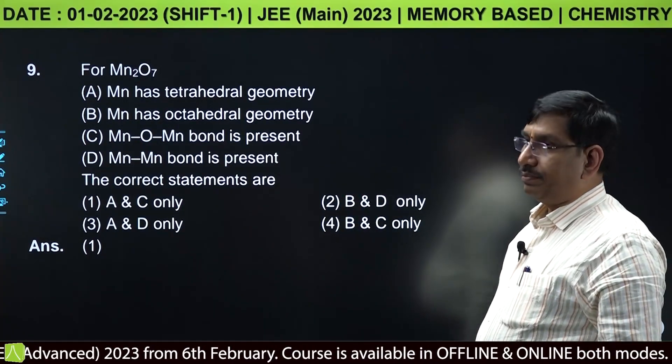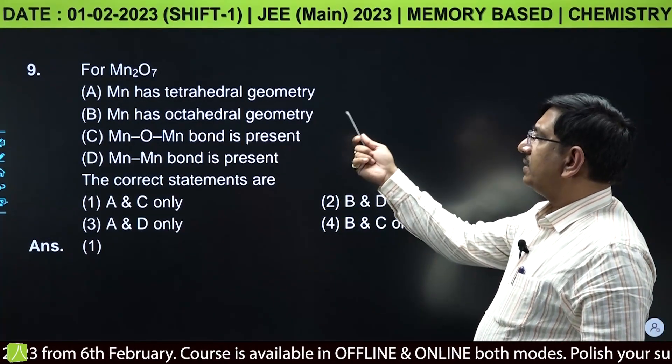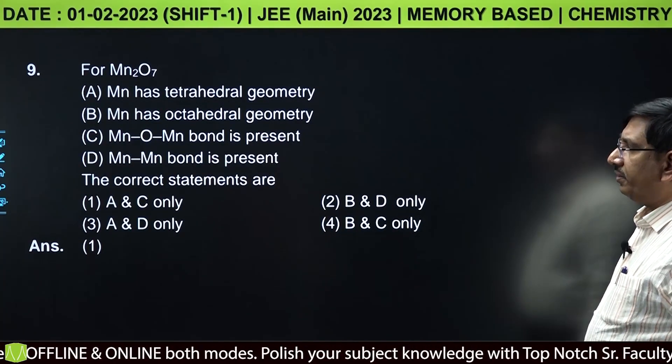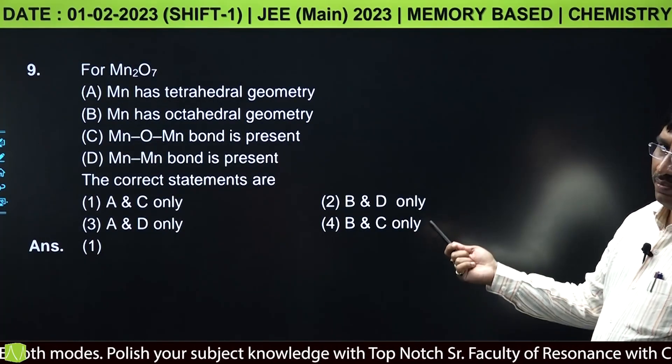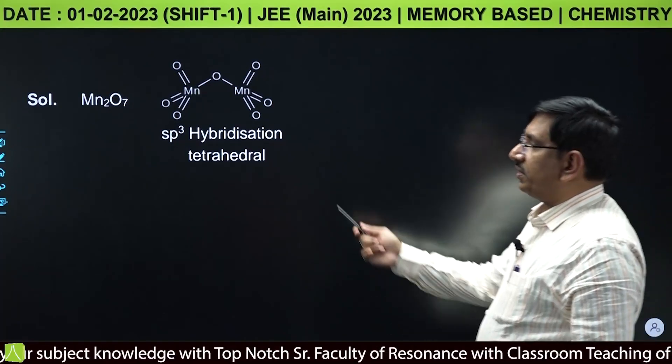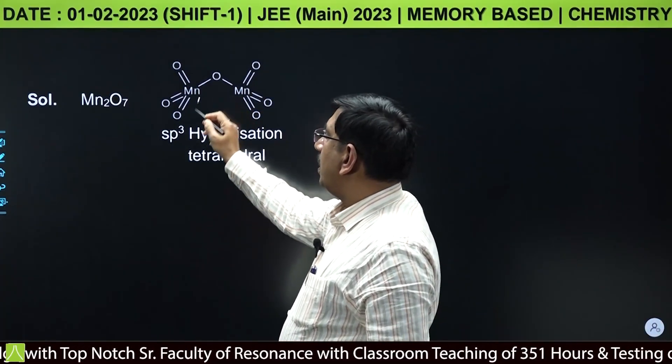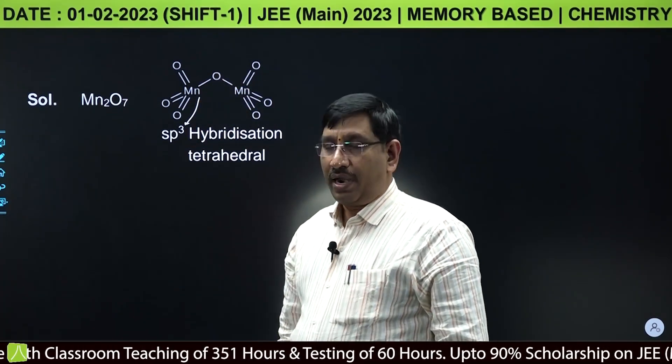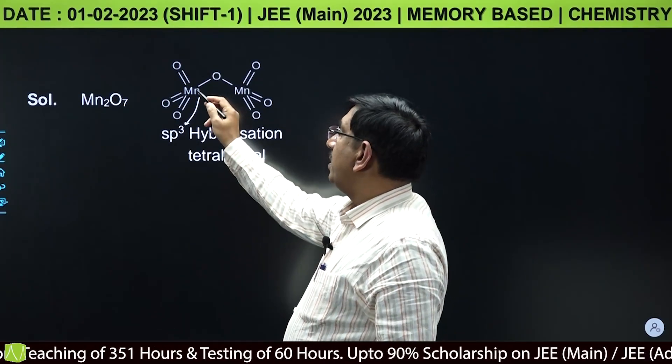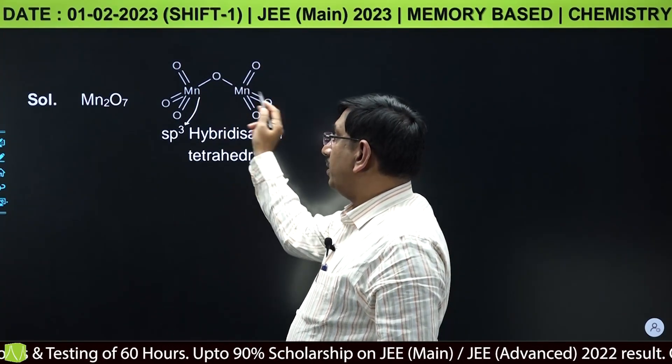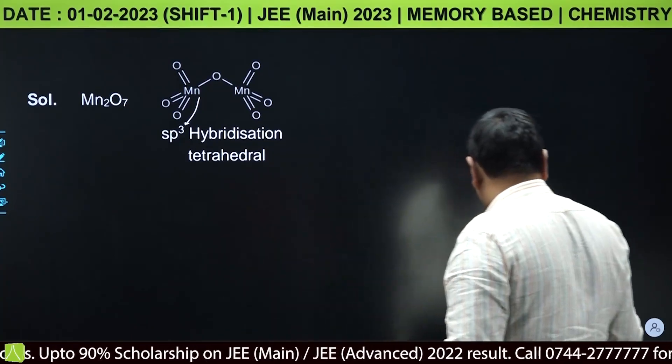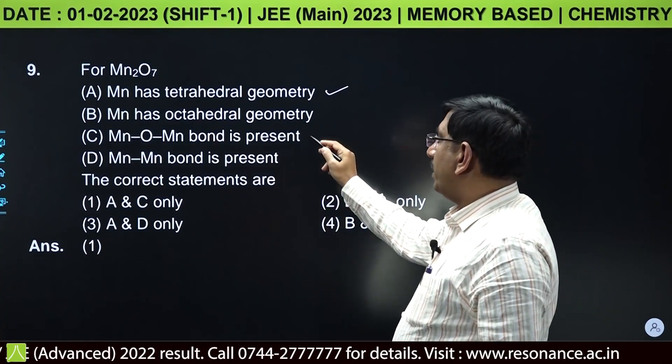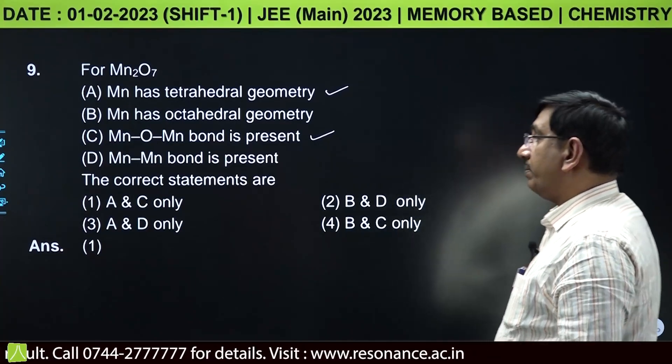For Mn2O7, which statements are correct: Mn has tetrahedral geometry, octahedral geometry, Mn-O-Mn bond, or Mn-Mn bond? The structure has sp3 hybridized Mn with tetrahedral geometry and there is Mn-O-Mn bond, but no direct Mn-Mn bond. So first and third statements are correct.